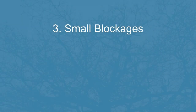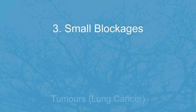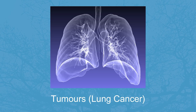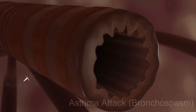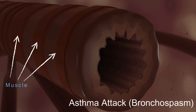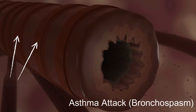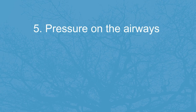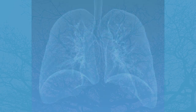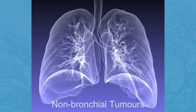Or 3. Obstruction due to small blockages in the air tubes from a tumour such as lung cancer. Or 4. Obstruction due to muscle tightening, forcing the tubes or airways to close up. For example, in an asthma attack, bronchospasm, the muscle around the bronchi or bronchioles tightens, bronchoconstriction. Or 5. Obstruction due to pressure on the airways, forcing them to close up, for example from tumours not in the bronchus air tubes, called non-bronchial.